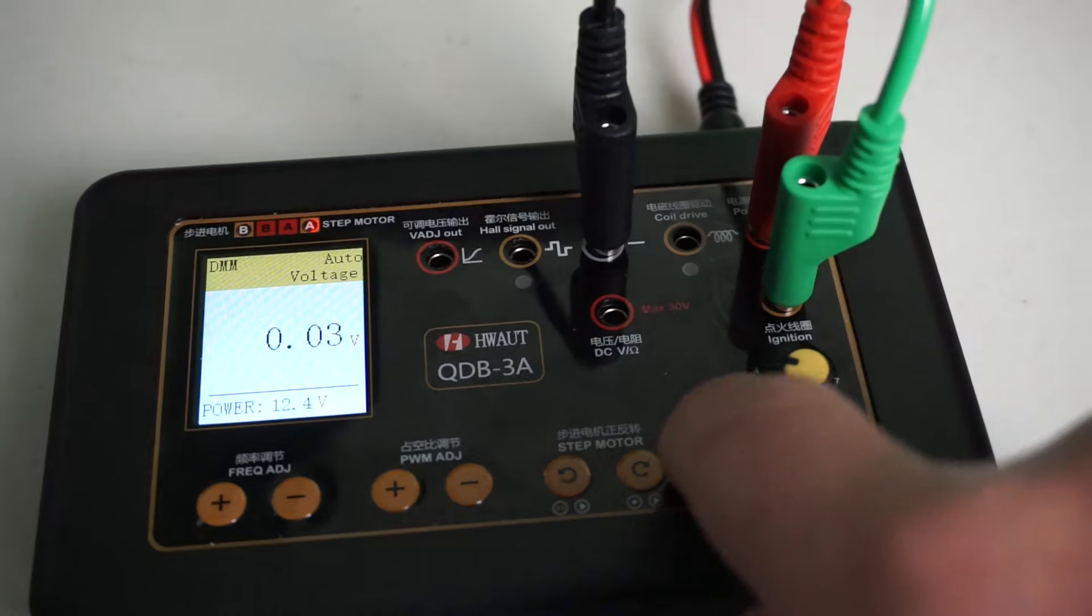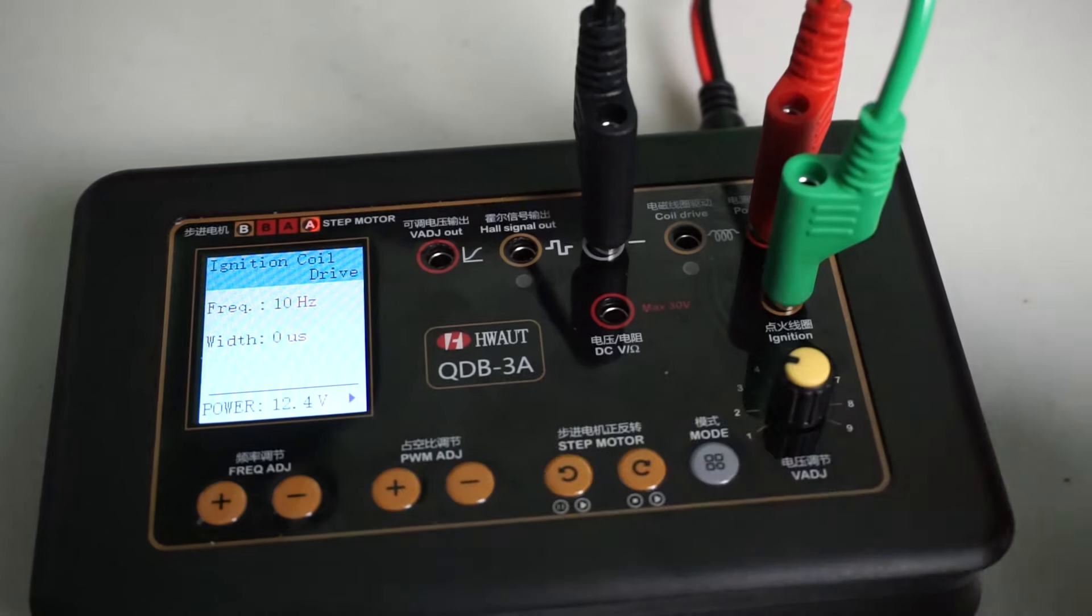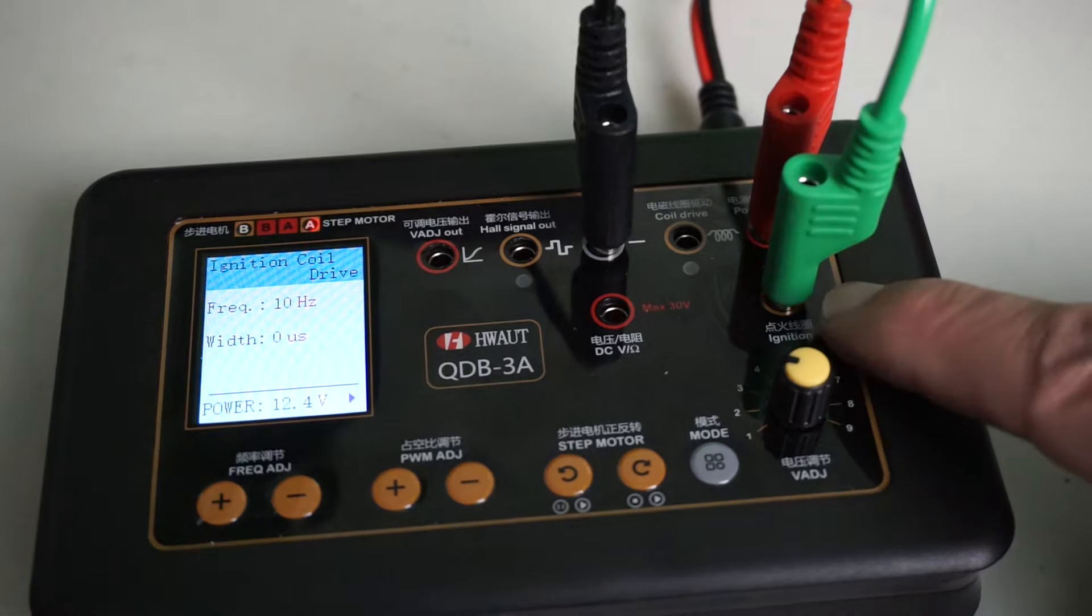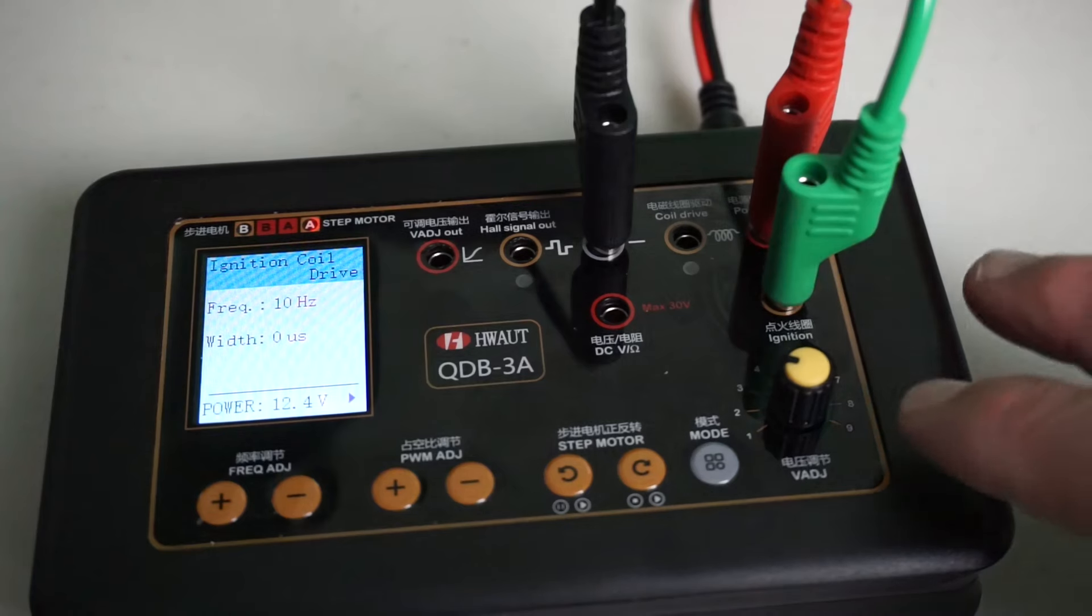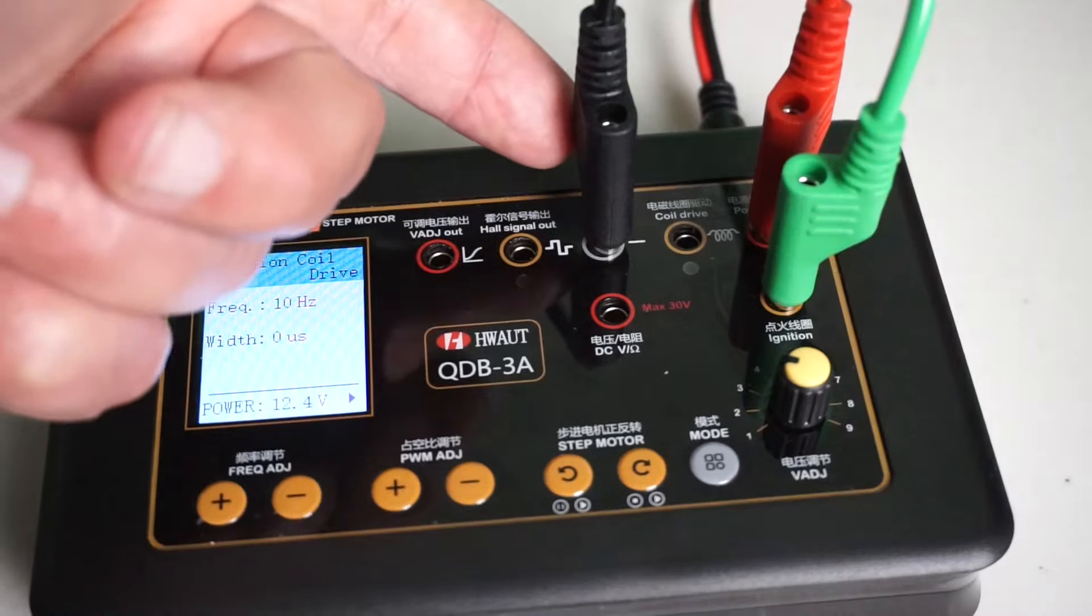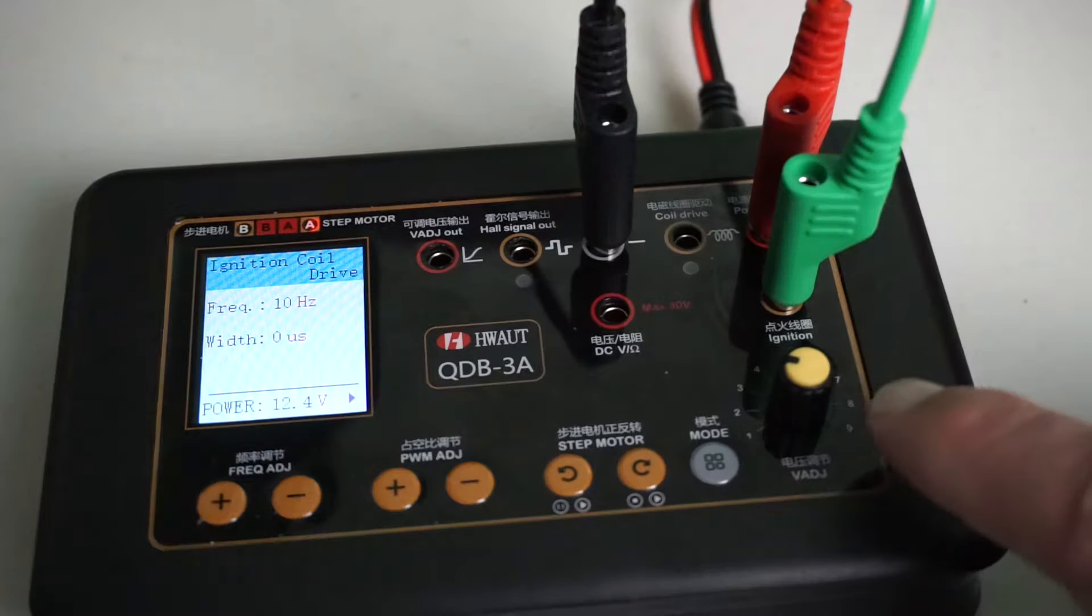If I use this mode button, I can cycle through to the ignition coil driver. That's on this pin here. That's for the old school two wire coils, direct drive. Notice also the use of the ground pin here. Now let's go and try this out in vehicle.